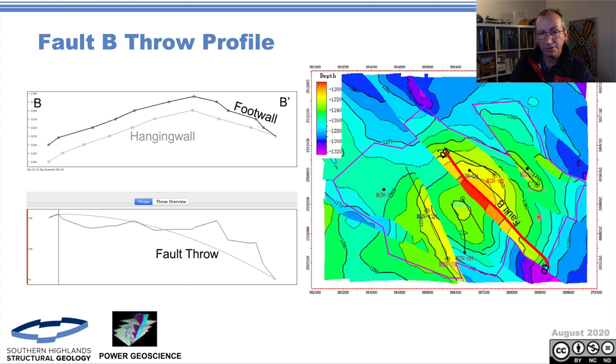So the B fault on the northeastern side of the field. Upthrown, we're standing on in the downthrown side, looking back at the upthrown side, that's the upthrown there, footwall, and there's the downthrown hangwall down here. We've got a fairly sensible displacement profile.